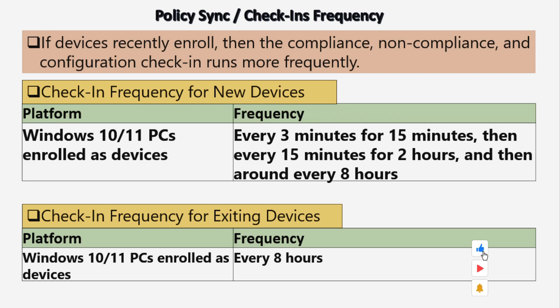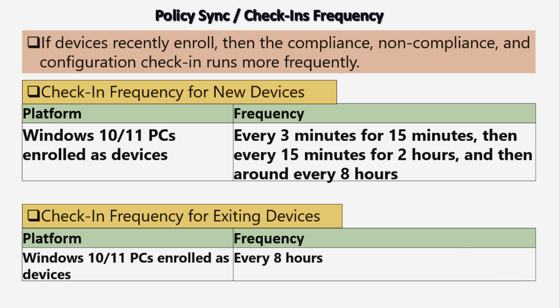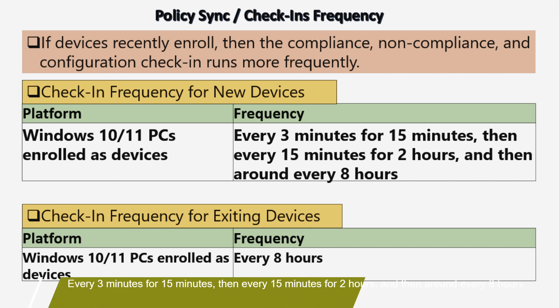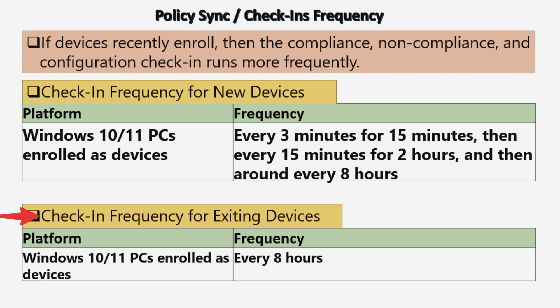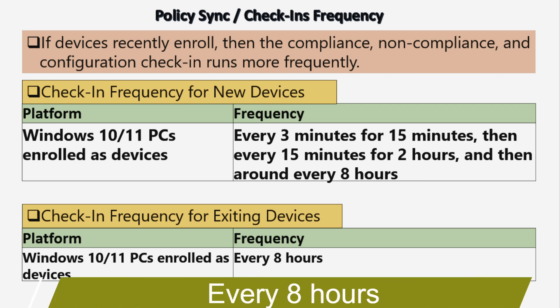If a device recently enrolls, the compliance, non-compliance, and configuration check-in runs more frequently. For new devices, the check-in frequency for Windows 10 or Windows 11 is every 15 minutes, then every 15 minutes for 2 hours, and then around every 8 hours regularly. The check-in frequency for existing Windows 10 and Windows 11 devices is every 8 hours.